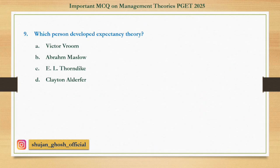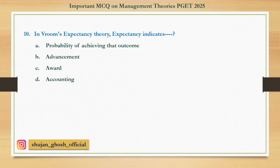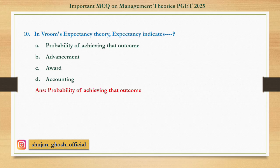Question number 9: Which person developed the expectancy theory? Option A: Victor Vroom. B: Abraham Marshall. C: E.L. Thorndike. D: Clayton Alderfer. Answer is Victor Vroom. Question number 10: In Vroom's expectancy theory, expectancy indicates — Option A: Probability of achieving that outcome. B: Advancement. C: Award. D: Accounting. Answer is Probability of achieving that outcome.